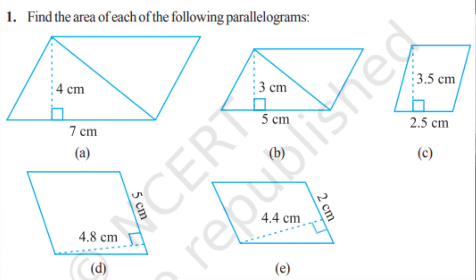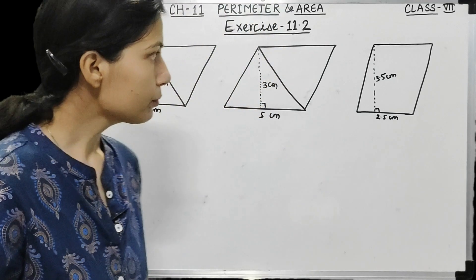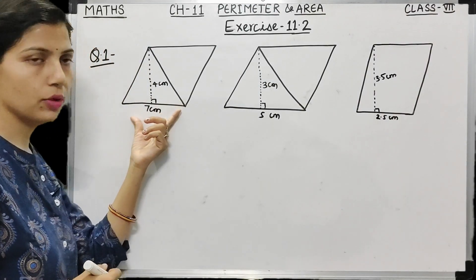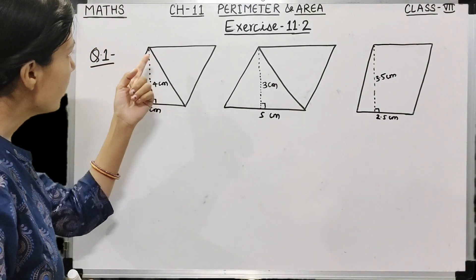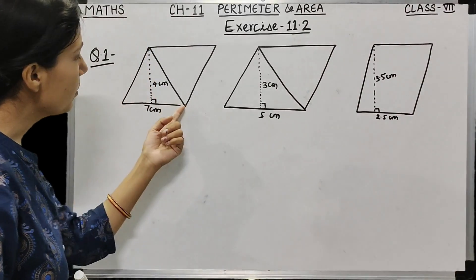Question number one: find the area of each of the following parallelograms. You are given five parallelograms with their height and base, and using the height and base you have to find the area. For the first parallelogram, you can see it is divided into two triangles.